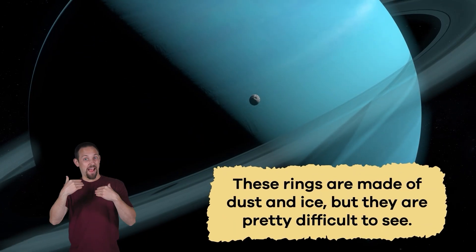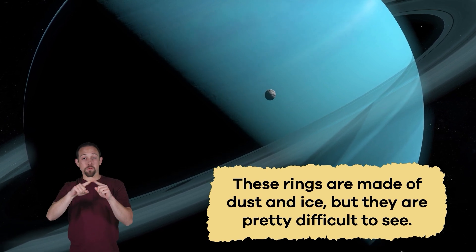Would it surprise you to learn that Uranus has rings? It's true. These rings are made of dust and ice, but they are pretty difficult to see.